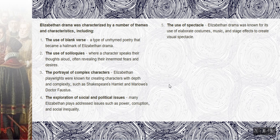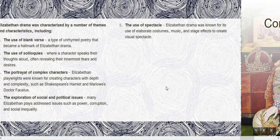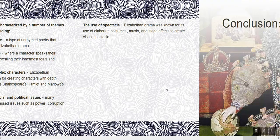The exploration of social and political issues. Many Elizabethan plays addressed issues such as power, corruption, and social inequality. The use of spectacle — Elizabethan drama was known for its use of elaborate costumes, music, and stage effects to create visual spectacle.